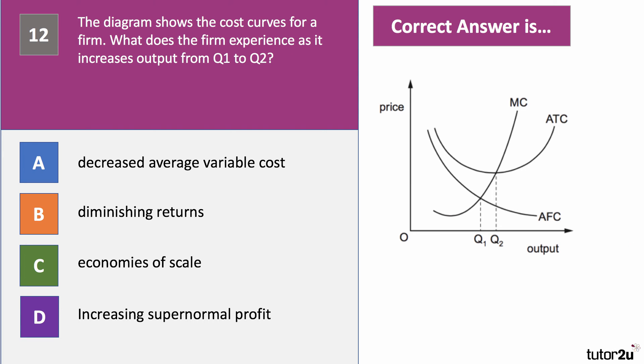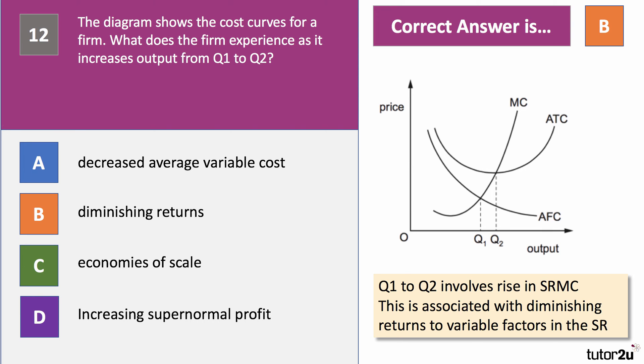Question twelve. The diagram shows the cost curves for a firm. What does the firm experience as it increases output from Q1 to Q2? The right answer is B — diminishing returns. This diagram shows short-run costs, so it can't be economies of scale because that's a long-run concept. It can't be D because there are no revenue curves shown. Average variable cost will be going up once marginal cost is rising and cuts average variable cost. Diminishing returns is where marginal productivity goes down and therefore marginal cost goes up. Q1 to Q2 involves a rise in short-run marginal costs associated with diminishing returns to variable factors such as labour in the short run.